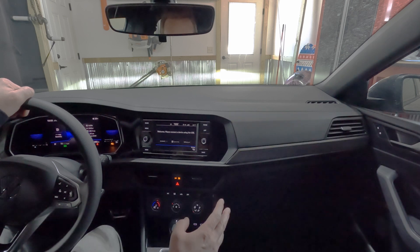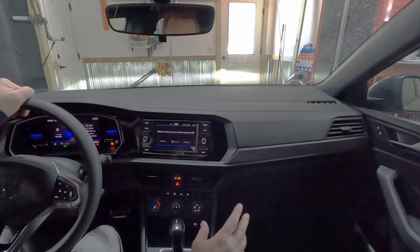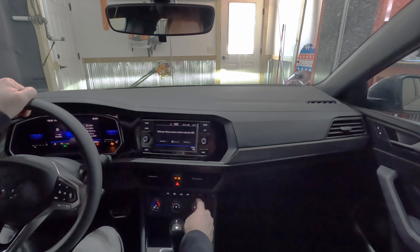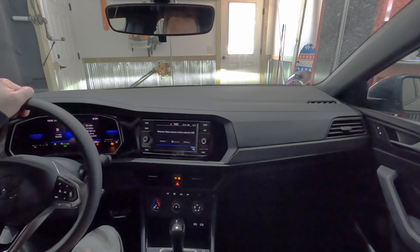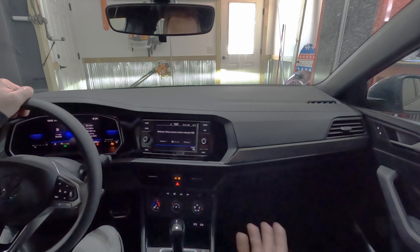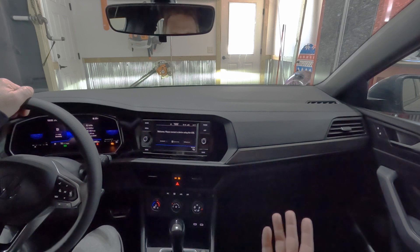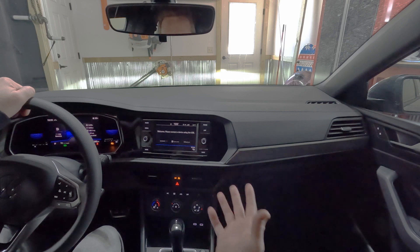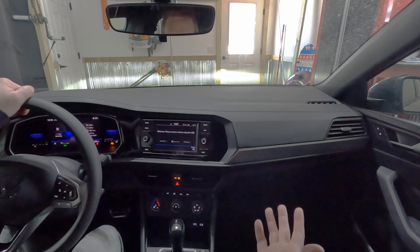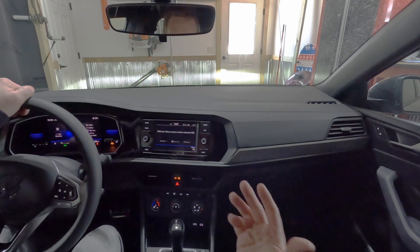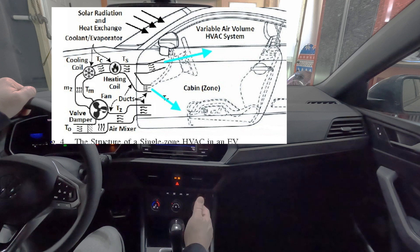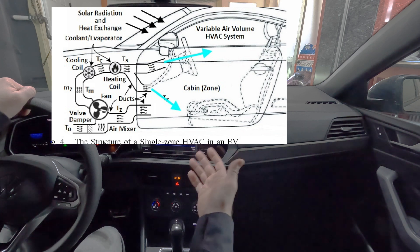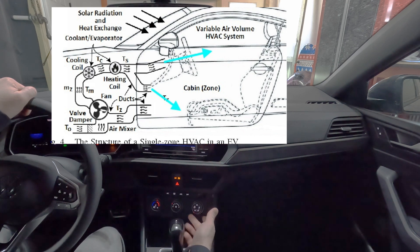The next main control on the air side is our vent selector. This controls where the air is directed in the vehicle. It's moving dampers below the dash after the fan to change the route the air takes, so we can get it blowing up in our face or down by our feet.